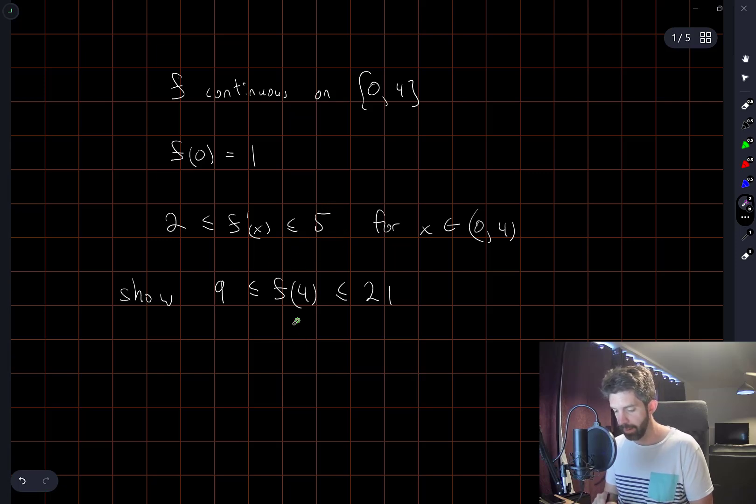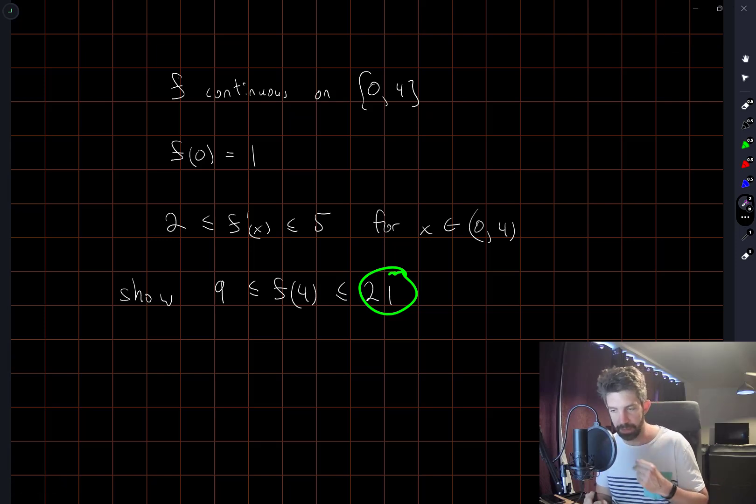...then the value of f(4) will equal 21, because we start at 1, increase at a rate of 5 over an interval of length 4, and so 1 + 4 × 5 = 21.